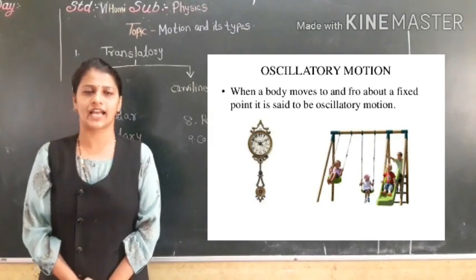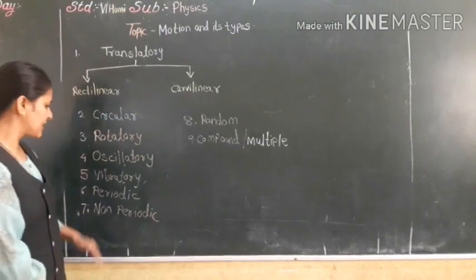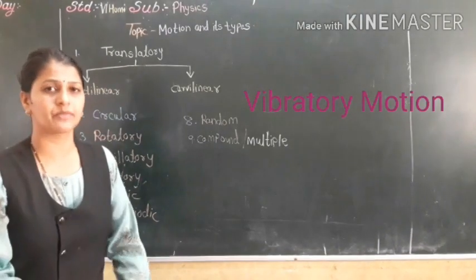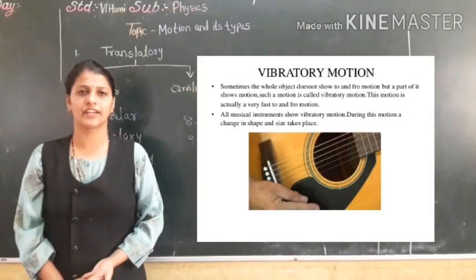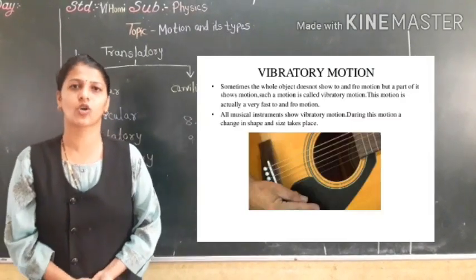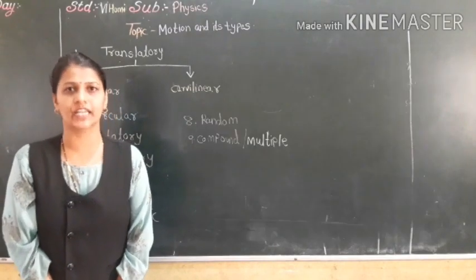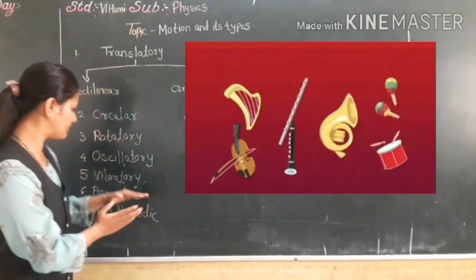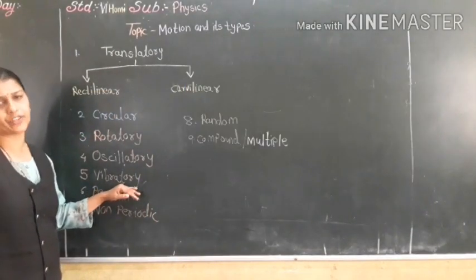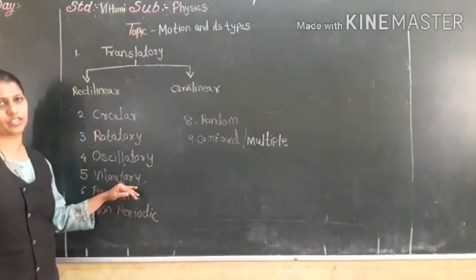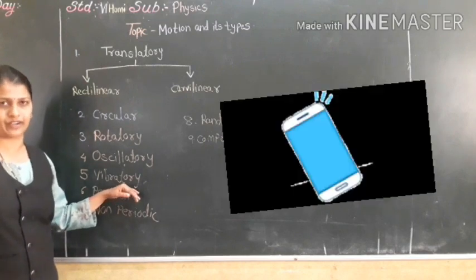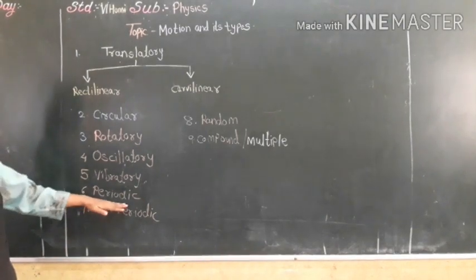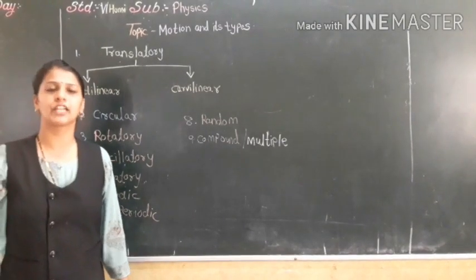Next is vibratory motion. Vibratory motion means when an object gets vibrated. All musical instruments are examples of vibratory motion. Your mobile phone also gets vibrated — that is vibratory motion.